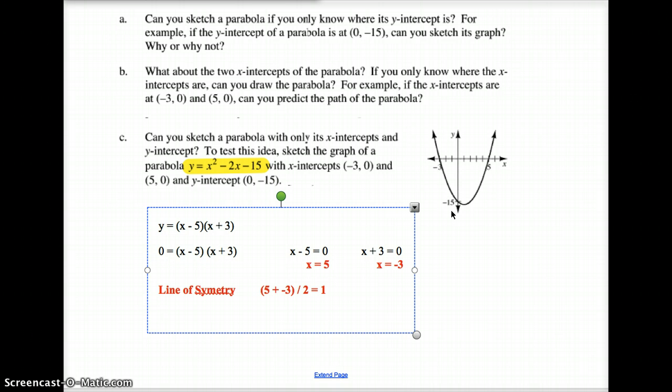So my line of symmetry here is x equals 1. What that means is that this one spot right here, you'll notice if I draw a straight line, that's where this parabola becomes a mirror image of itself.